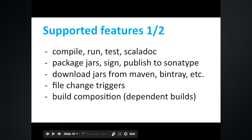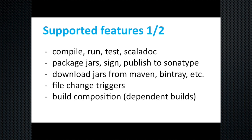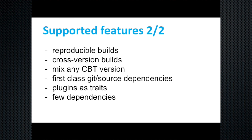Features that are supported: compiling, running, testing, ScalaDoc, packing jars, signing, publishing to Sonatype, downloading jars from different repositories, triggering — loop-compiling, running, or testing on file changes — and composing builds in various ways. Other supported features include reproducible builds, cross-versioning for different Scala versions such as 2.10 and 2.11, mixing builds using different CBT versions, git dependencies, plugins, and traits. CBT itself has very few dependencies: Zinc, a library to monitor file changes on OSX, GPG for the command line, and jgit.